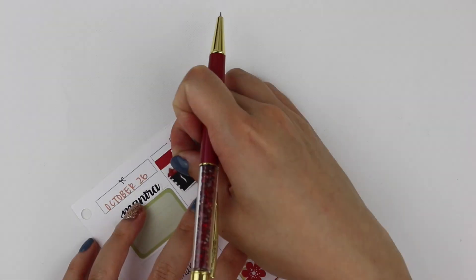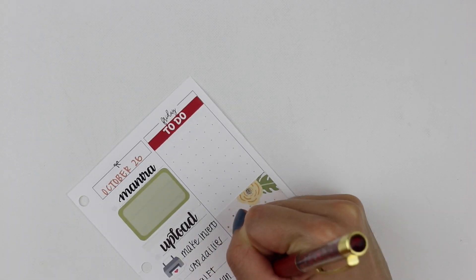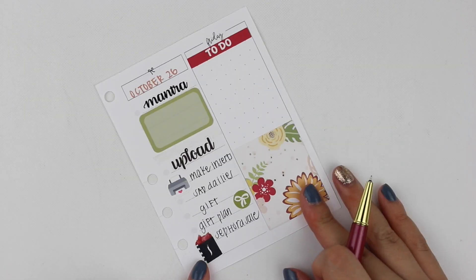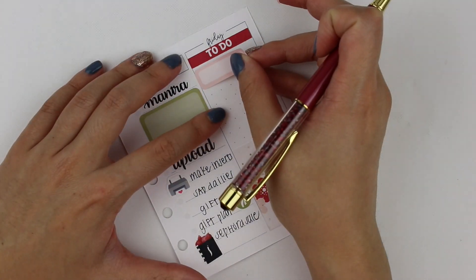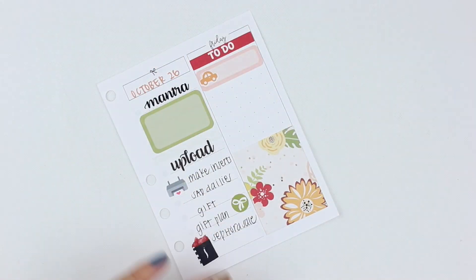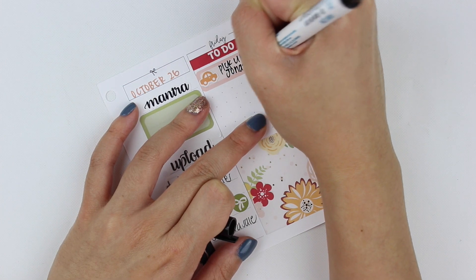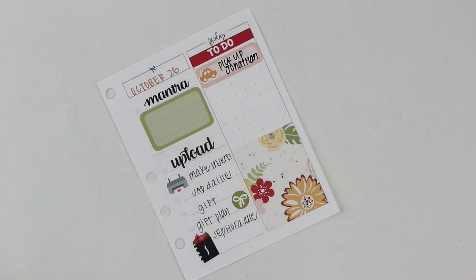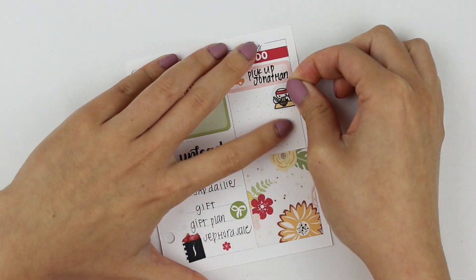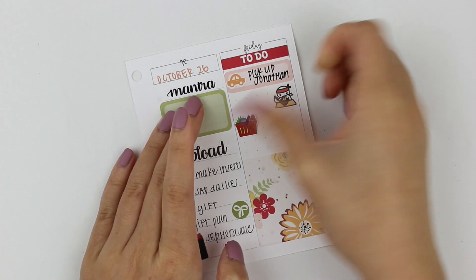On Friday, I put down a checklist for a bunch of things I wanted to get done. On the left, I like to put down little things that I want to do, things that are quite quick to do. The Sephora VIB sale was that day, which is exciting. I made some more inserts.